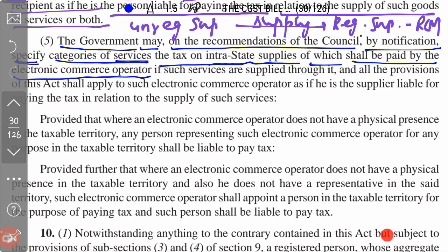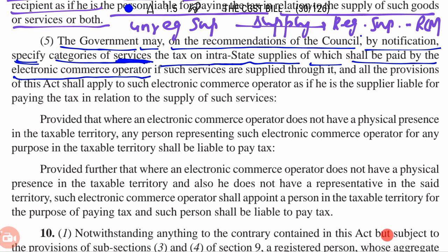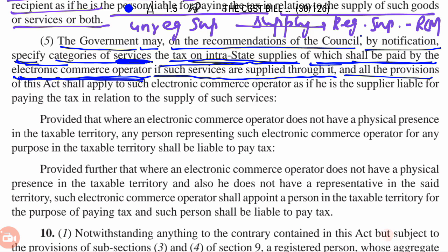Friends, here we have to cover only services — only supply of services — which are specified by the government notification. The tax on those shall be paid by the Electronic Commerce Operator. This is called the ECO's liability. In specified services, the electronic commerce operator shall be treated as if he is the supplier. If such services are supplied, all the provisions of this Act shall apply to such Electronic Commerce Operator as if he is the supplier liable for paying tax in relation to the supply of such services.